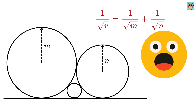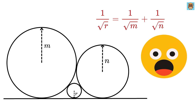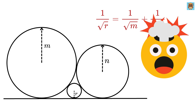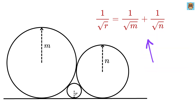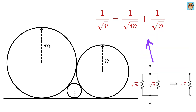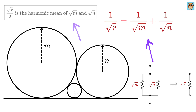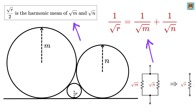This result is exactly the same formula as for resistors in parallel! We can also say that √r is the harmonic mean of √m and √n. My mind is simply blown away looking at this result.